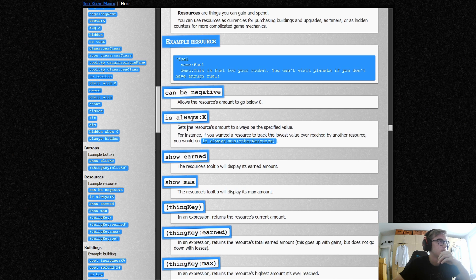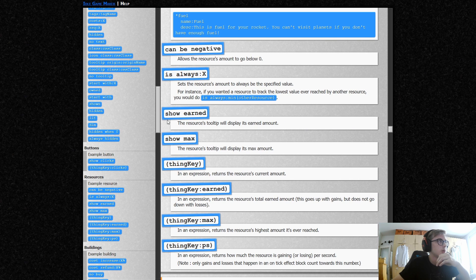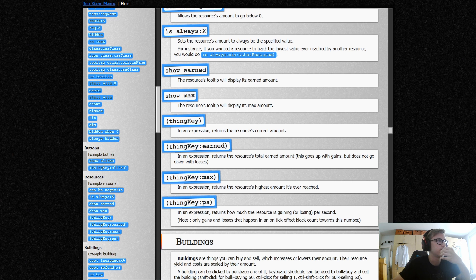Here we have resources as well. Their unique properties can be negative, for example, is always some kind of number. You can also show earned, which will display its earned amount in the resources tooltip, show max, thinky earned, max.